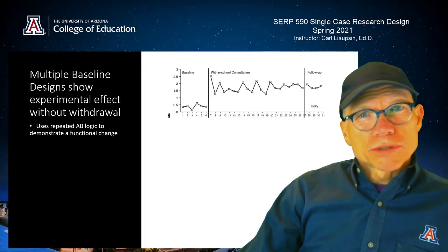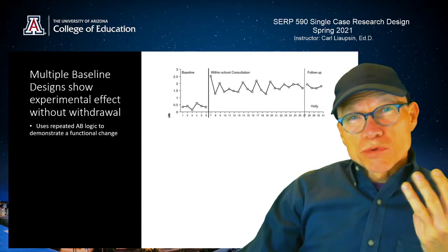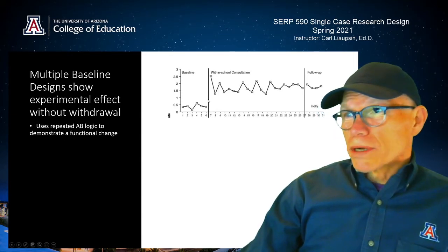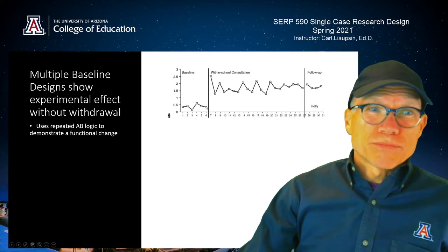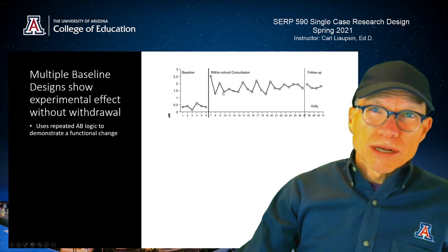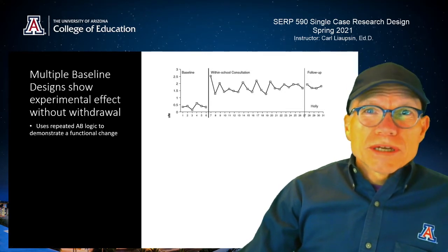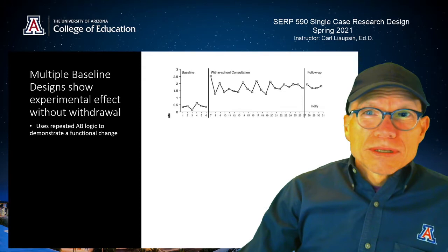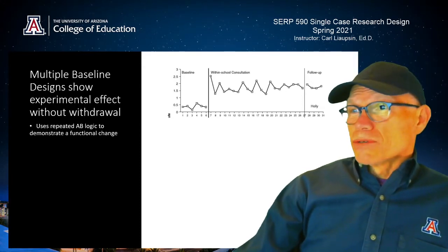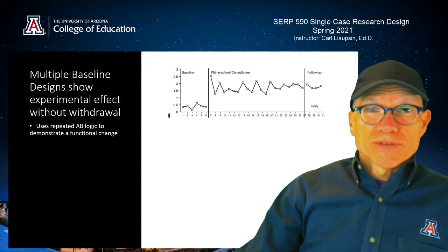With an A-B design you really only have one demonstration of experimental effect. That's great for clinical settings, great to show parents, great to show your supervisor, but it's not a good demonstration of experimental effect. What you want to show experimental effect is three demonstrations of control — there's just one here, going from baseline to an improvement in intervention. So what are you going to do to show another experimental effect?